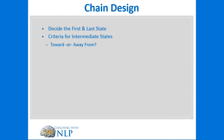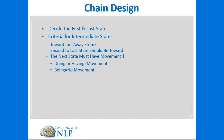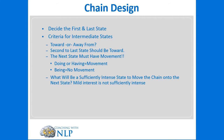The second state can be towards or away from — towards what you want or away from what you don't want. The second-to-last state should be a towards state. Each next state must have movement — doing or having has movement, while being typically doesn't. A state like nirvana or being very relaxed typically doesn't have enough movement; it's not going to be strong enough to get the client to move forward to the next state. We need a sufficiently intense state to move the chain forward.